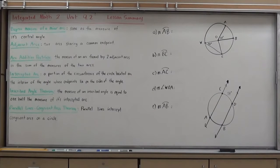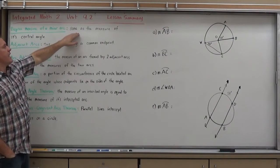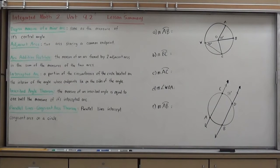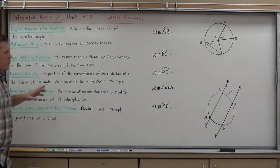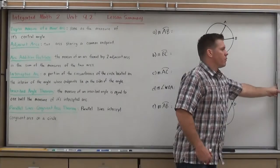So let's start off with a little bit of the vocab we need to know for this section. The degree measure of a minor arc, that's the first thing we're going to start trying to do, is find the degree measure of a minor arc, and it is always the same as the measure of its central angle.